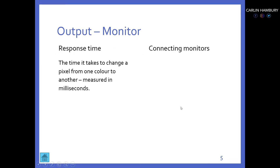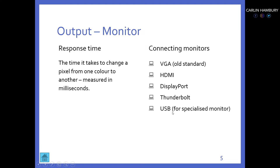Some other things on your monitor to take note of include response time — the time it takes to change a pixel from one color to another, measured in milliseconds. The quicker it can do that, the better the image will be when changing from one color to another, especially when watching movies and things like that.